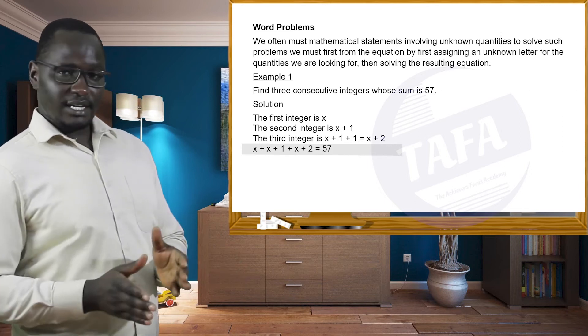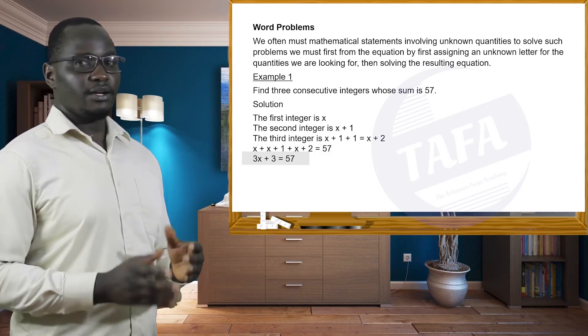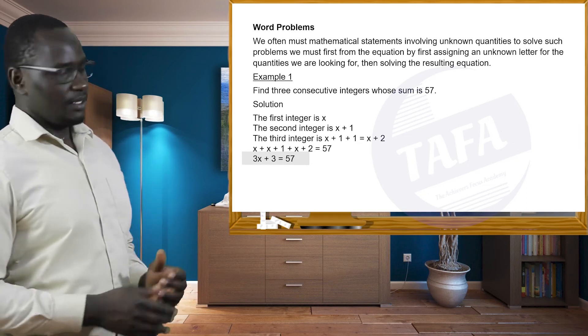Now if we collect like terms, that is x plus x plus x is 3x. Then 1 plus 2 is 3 is equal to 57.